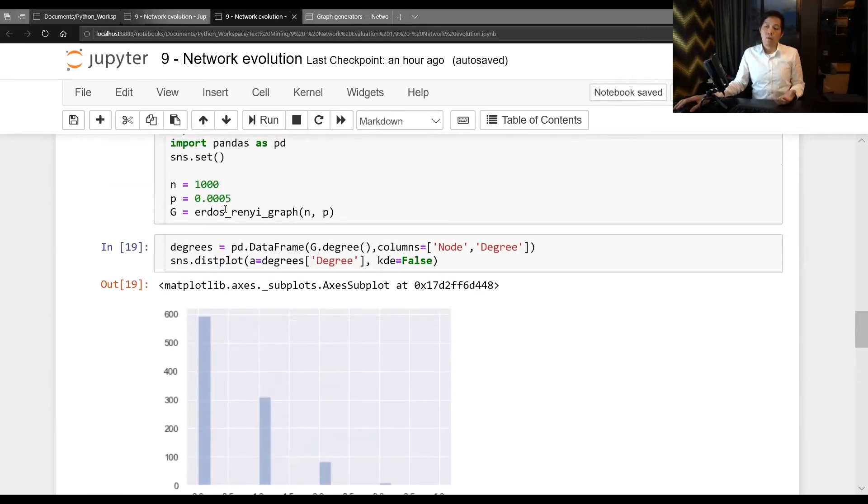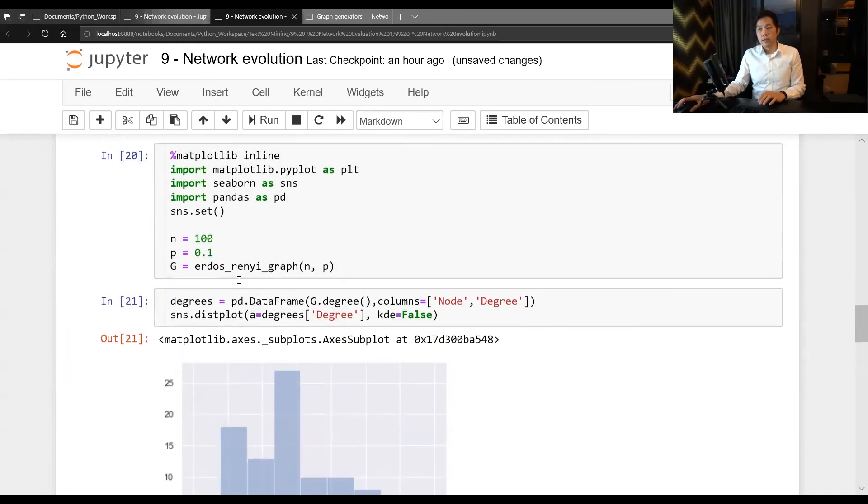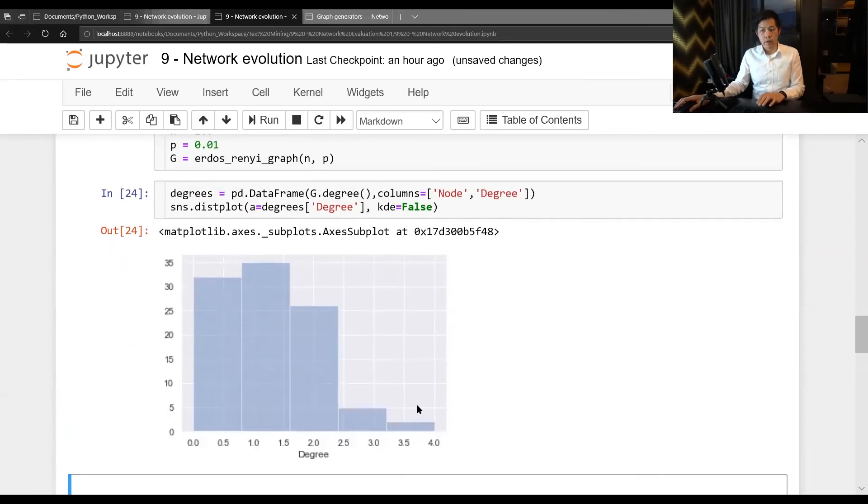But when you have N time P equal one, say a hundred and 0.01. And then your graph look like this one. This is not one. This is 10. So by 0.01. It looks like this one. Now it kind of shifting from become exponential to this a bit.